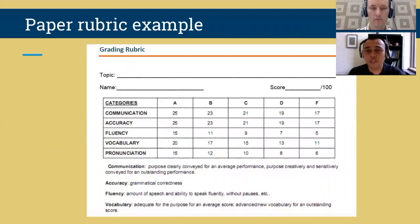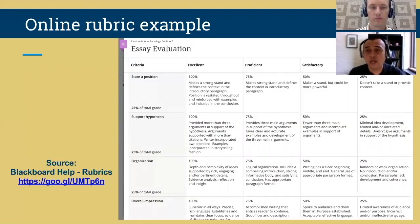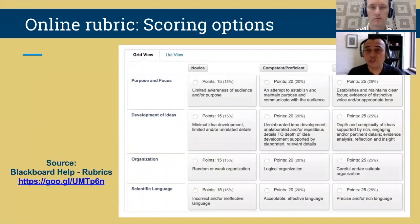While paper rubrics provide assessment information in a printed format, online rubrics can be easily adapted to an online environment with more potential for customization. You can see on screen the different categories with different scales for each. In an online environment you also have the ability to change the point system — for example, if you initially set a grade value of 50 points but later want it to be 100 points, this can be easily changed by adapting the point scale in the online rubric.